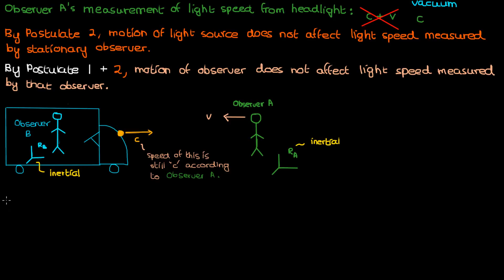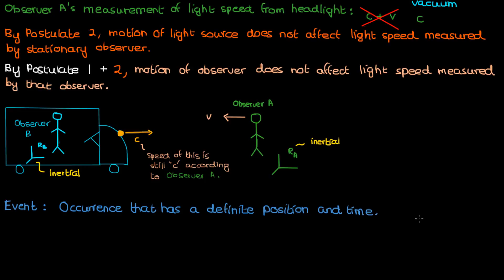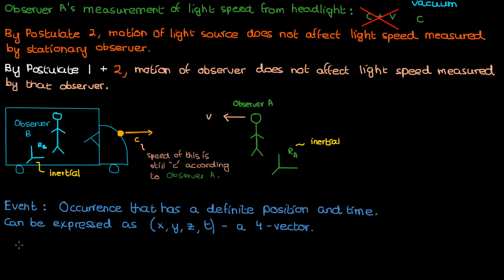Before we move on to the relativity of simultaneity, let's first define an event. An event is an occurrence that has a definite position and time. In relativity, we describe events using spacetime coordinates — the regular space coordinates x, y, and z, and the time value t as a fourth dimension. This ordered quadruple (x, y, z, t) is also called a four-vector — a vector in special relativity with four components that transforms in a specific way, which we'll see later in the series.